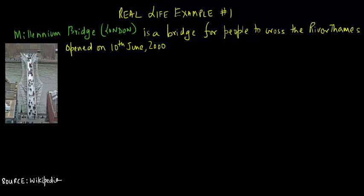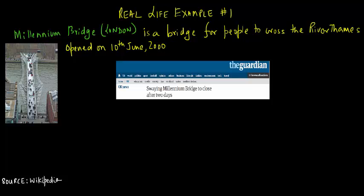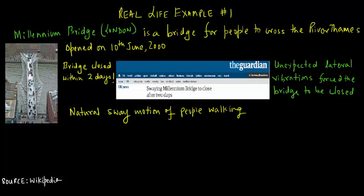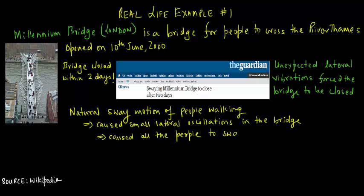Then something rather dramatic happened. The bridge closed within two days of it opening. Essentially, unexpected lateral vibrations forced the bridge to be closed. What really happened was that the natural sway of motion of people walking caused small lateral oscillations in the bridge. This, in turn, caused all the people on the bridge to sway in step which increased the amplitude of the bridge oscillations.